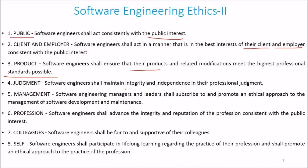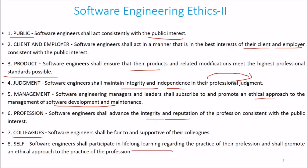Fourth, Judgment — software engineers shall maintain integrity and independence in their professional judgment. Fifth, Management — software engineering managers and leaders shall subscribe to and promote an ethical approach to the management of software development and maintenance. Sixth, Profession — software engineers shall advance the integrity and reputation of the profession, consistent with the public interest. Seventh, Colleagues — software engineers shall be fair to and supportive of their colleagues. Eighth, Self — software engineers shall participate in lifelong learning regarding the practice of their profession and shall promote an ethical approach to the practice of the profession.